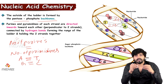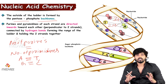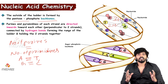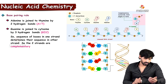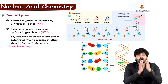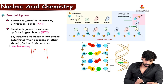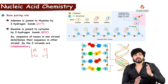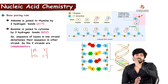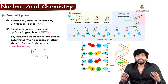Adenine to thymine: two hydrogen bonds. Guanine to cytosine: three hydrogen bonds. This base pairing with their hydrogen bonds is very important in keeping the two strands together. The sequence of bases in one strand directs the opposite base in the other strand — if adenine is in one strand, it must be thymine in the other; if guanine, then cytosine. This is called complementary base pairing.